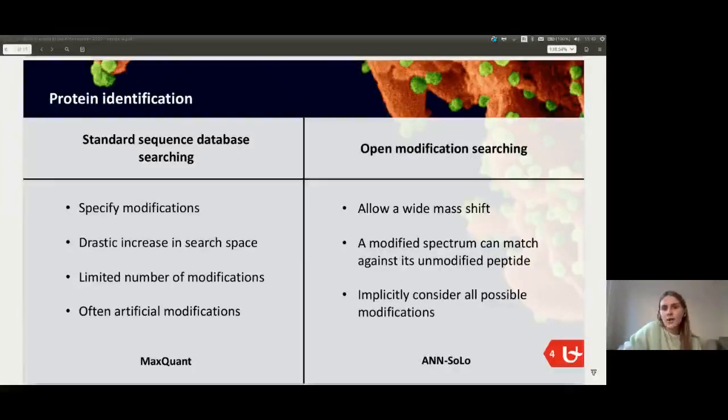An alternative is open modification searching, in which you allow the masses of your spectrum to have a shift. So you allow a very wide mass shift. And in this way, you implicitly consider any type of modification because a modified spectrum will be able to match against its unmodified variant. The original results were analyzed using standard sequence database searching. They specifically used MaxQuant. And we re-analyzed that data using ANSOLO to perform open modification searching.